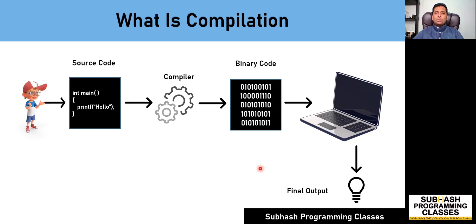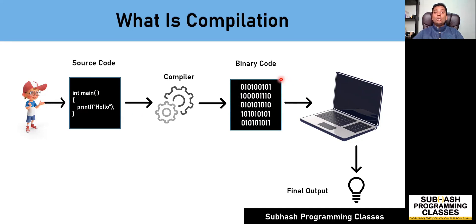You might ask: why do we actually need compilation? As mentioned in an earlier video, computers cannot understand high level source code. The only language computers understand is low level binary code written in zeros and ones. Whereas programmers cannot write code in binary language because it is highly impossible to write instructions in zeros and ones.